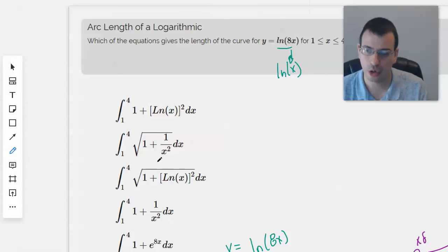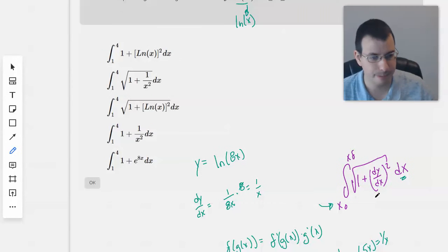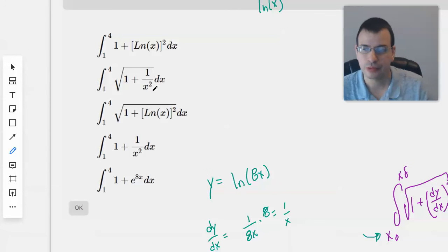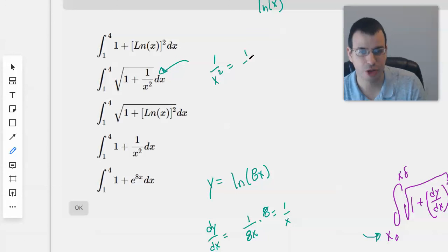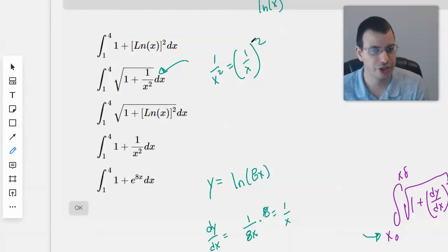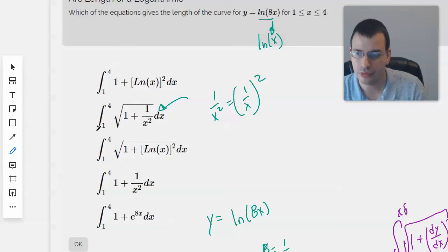So if we look over here, we know that we want it to be of this form here with 1 plus dy dx squared, which is this right here. Another thing to note is 1 over x squared is the same as 1 over x quantity squared. Because you just square the top and the bottom. And 1 squared is just 1. So you go from 1 to 4, and 1 plus 1 over x squared, and this will be the right answer.